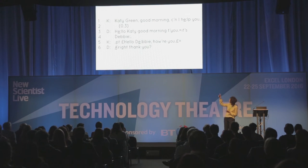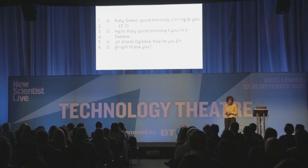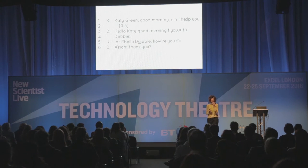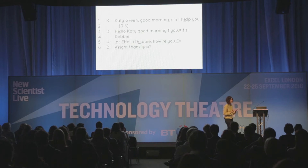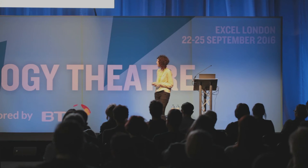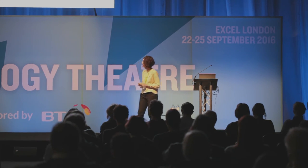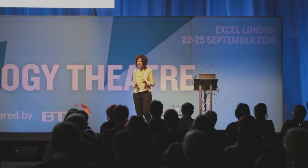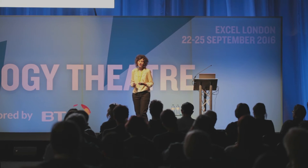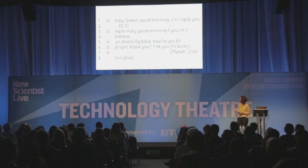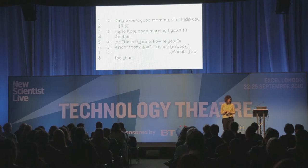The voices sound a bit strange because I've changed the pitch to anonymize them. We've got the hellos returned. At line five, Kay says 'Hello Debbie, how are you?' — the pound signs mean smile voice. We can hear that she's smiling because she now knows who she's talking to. Debbie says 'All right, thank you.' We might hope Debbie will reciprocate. These folks are from the East Midlands, so she elicits the reciprocal with 'Are you me duck?' And the response: 'Yeah, not too bad.'